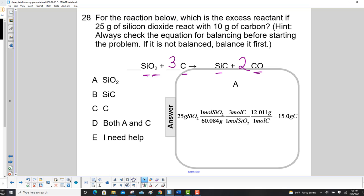So what are we given? We're given 25 grams of silicon dioxide. And we want to find out how much carbon we need to react. So we start with our 25 grams there.